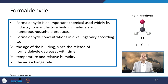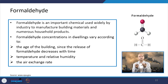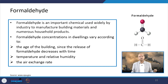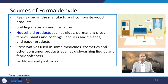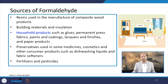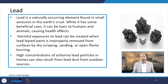Formaldehyde is a very important chemical widely used in industry to manufacture building materials, so it comes primarily from building materials. Concentrations in dwelling units depend on the age of the building, and formaldehyde release decreases over time. Temperature and relative humidity influence its concentration in air. Sources include household products like glues, permanent press fabrics, paints, coatings, finishes, and paper products.